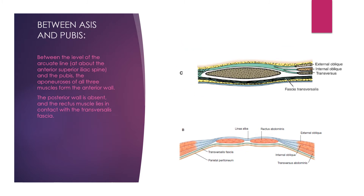The third part is below the umbilicus, between the anterior superior iliac spine and the pubic crest. Here, all three aponeuroses move anteriorly, forming only the anterior wall. Posteriorly it is deficient — absent. Only the fascia transversalis is present posteriorly, and the rectus abdominis is in direct contact with the fascia transversalis. In the midline, they interweave to form the linea alba.